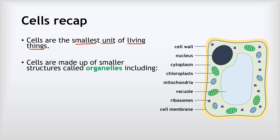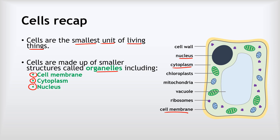Cells are made up of smaller structures that we call organelles or subcellular structures. That includes the cell membrane, which controls what enters and leaves the cell; the cytoplasm, where chemical reactions take place; the nucleus, which contains DNA and controls the cell; the mitochondria, which release energy by aerobic respiration; and the ribosomes, which make proteins.